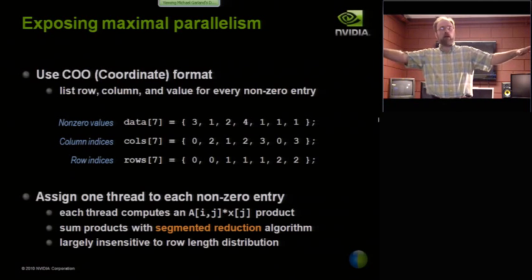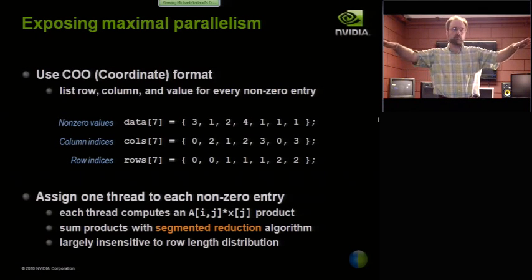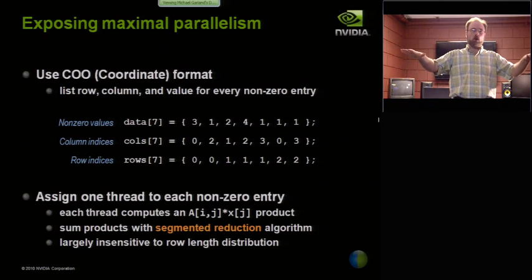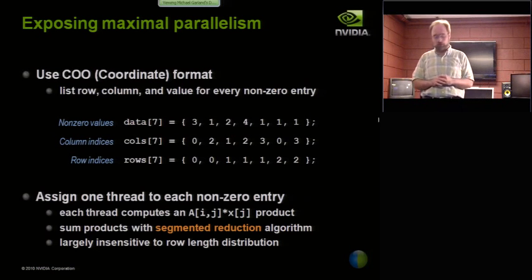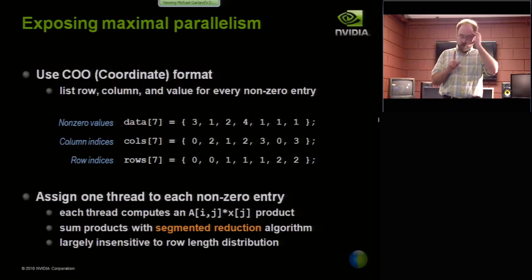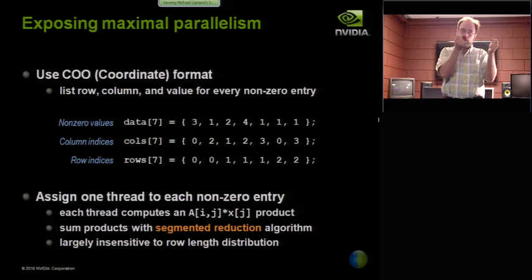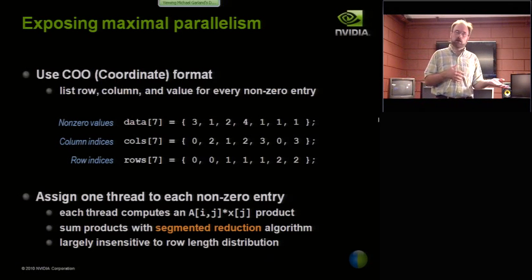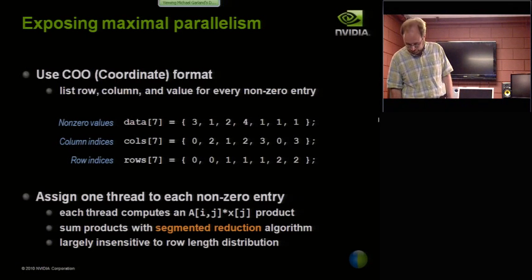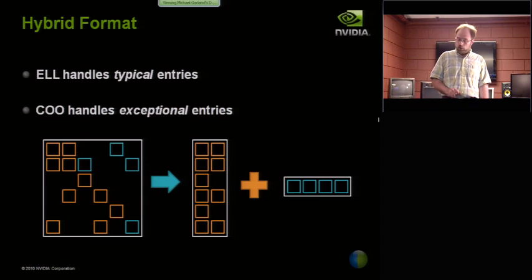The reason for doing this is that this particular kernel is largely insensitive to the row length distribution because it's essentially spreading the work out across all the threads of the machine. It's essentially statically scheduling the work so that it's relatively load balanced. It also exposes the maximal parallelism. But that's actually not a good thing, as I'll show you. The cost of coordinating the results from all these threads, namely every single thread does one multiply add and then has to do a relatively expensive segmented reduction, the cost of that coordination actually makes it perform worse than the other kernels.